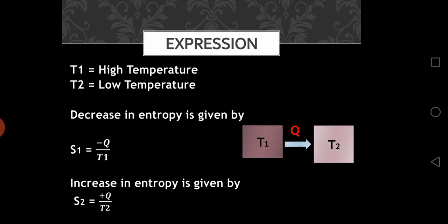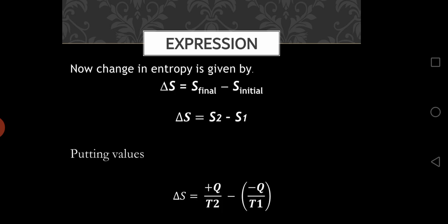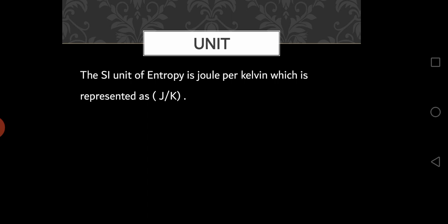And you can also find the change in entropy by the given relation that is S final minus S initial. So S final is S2 and S initial is S1. So putting the values of S2 and S1, you can get the value as you can see in the last relation. There is a unit for entropy and the SI unit for entropy is joule per kelvin which is represented as J/K.